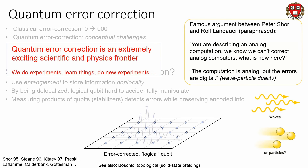Error correction is very exciting both because it's going to allow us to do complex computations in the near term, but also because it's an extremely interesting scientific frontier. It also gives us new ways and new lenses for looking at quantum mechanics and allows us to interact with really foundational principles.